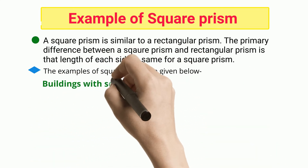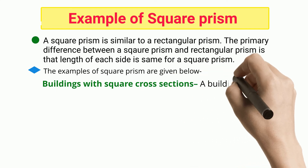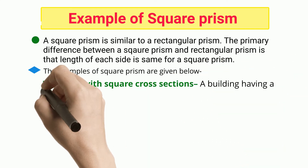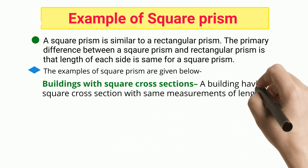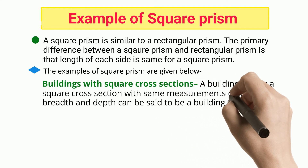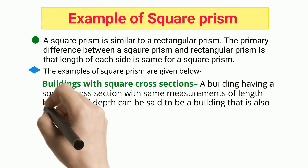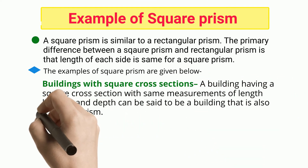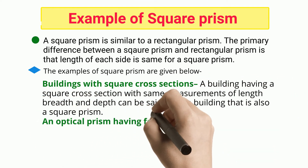Buildings with square cross-sections: a building having a square cross-section with the same measurements of length, breadth, and depth can be said to be a square prism.